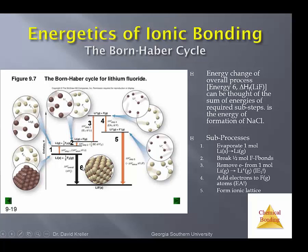It's possible for chemists to know all the other energies. The overall enthalpy of formation of an ionic compound can be measured by, say, calorimetry. The energy of getting those metal atoms into the gas phase is known, the energy of breaking the half mole of fluorine-fluorine bonds is known, the first ionization energy for the metal is known, and the first electron affinity for the non-metal — fluorine — is known. From knowledge of these energies, you can calculate the unknown.